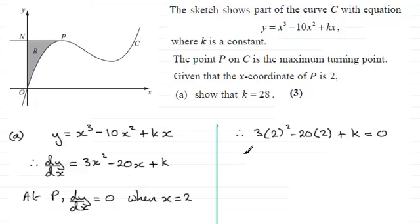So cleaning this up, 3 times 2 squared minus 20 times 2 comes to minus 28. So you've got minus 28 plus k equals 0, and if you add 28 to both sides we therefore have k equals 28.